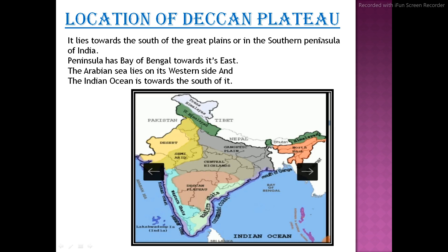Location of Deccan Plateau - where does it lie? It lies towards the south of the Great Plains, in the southern peninsula of India. The peninsula has the Bay of Bengal towards its east and the Arabian Sea on the west side. The Indian Ocean lies towards the south of it, as you can see through this map.